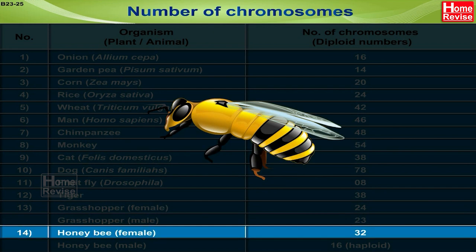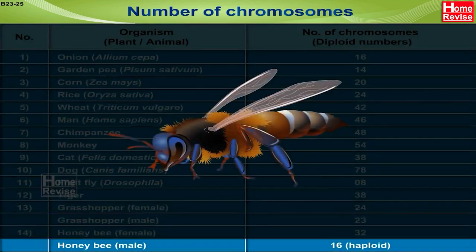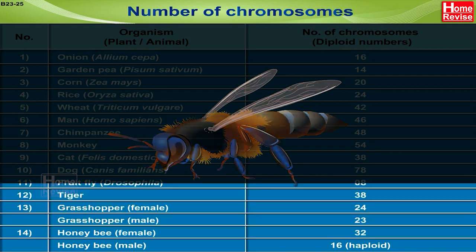In female honeybee, the diploid number of chromosomes is 32. All of the above are diploid numbers of chromosomes. However, the male honeybee has 16 — a haploid set of chromosomes.